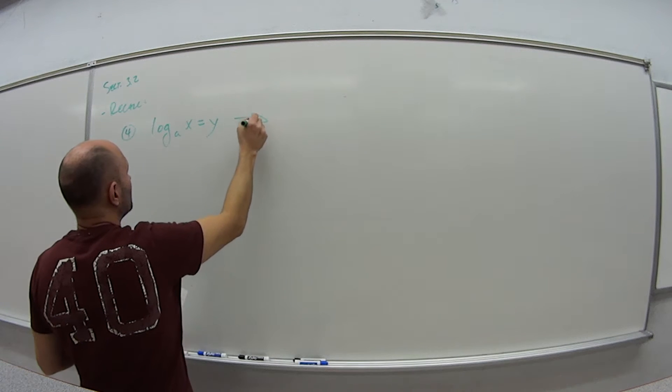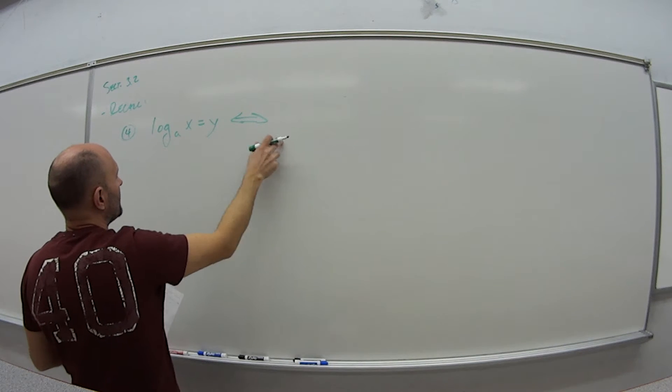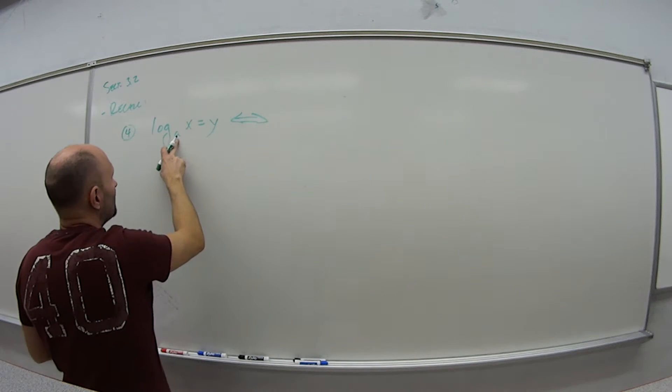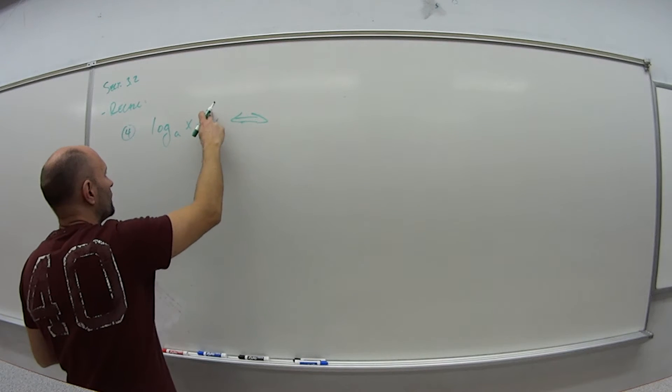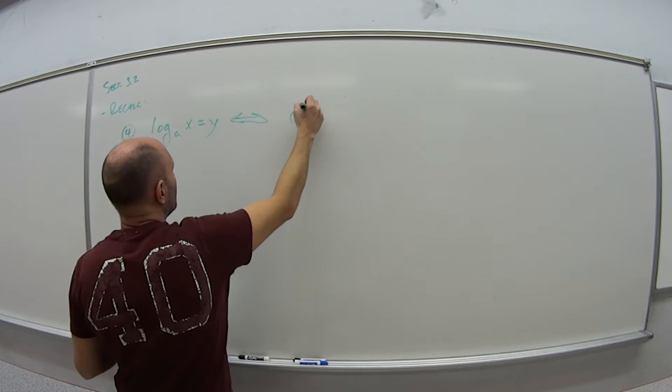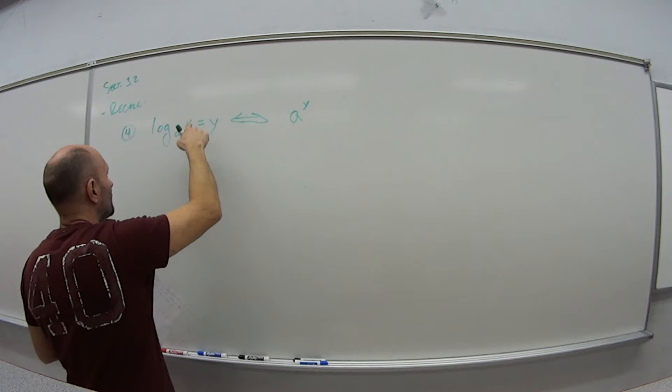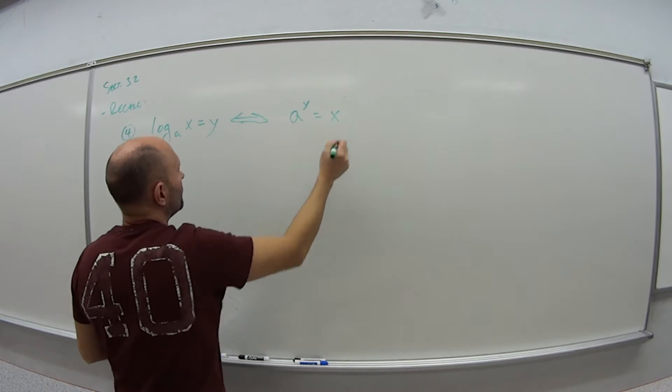When I have this, this really means the same as, so you can go either way. If I take the base, bring it over, and put it to this exponent, that means A to the Y power is equal to X.